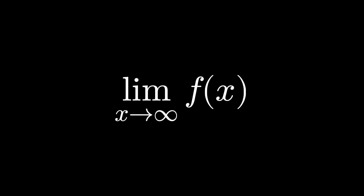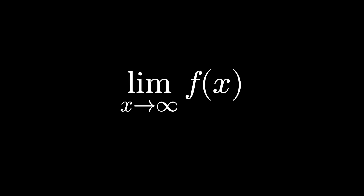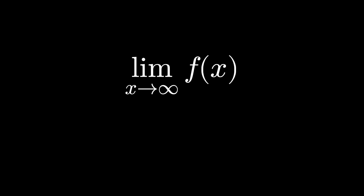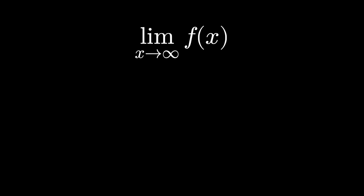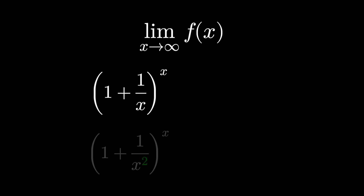One way you can try to handle infinity is by using the calculus technique of limits. We can approach infinity via functions, letting the variables in those functions grow larger and larger out to positive infinity. The problem with this is we can approach our question of 1 to the infinity in a multitude of ways. Consider these two functions: 1 plus 1 over x to the x, and 1 plus 1 over x squared to the x.